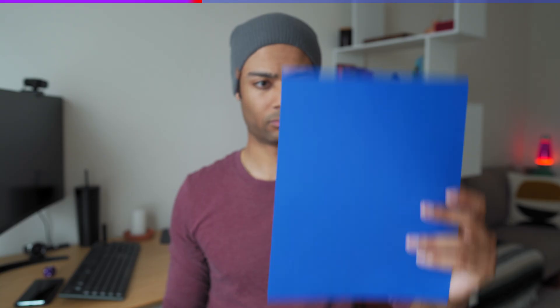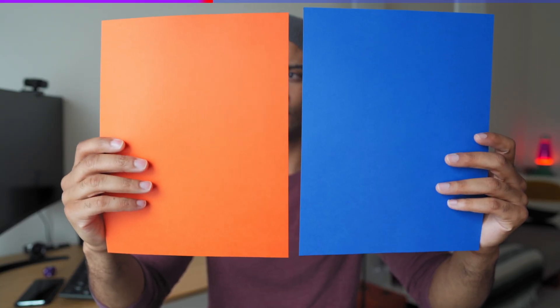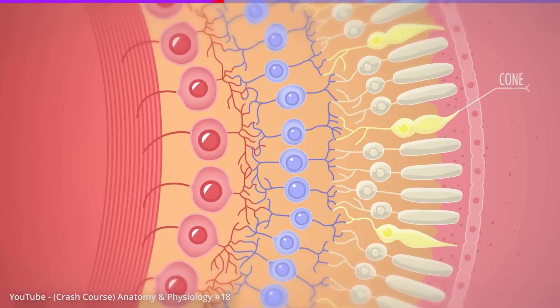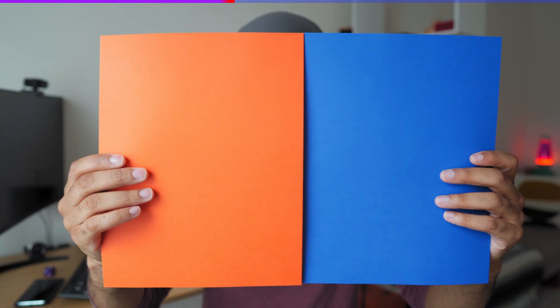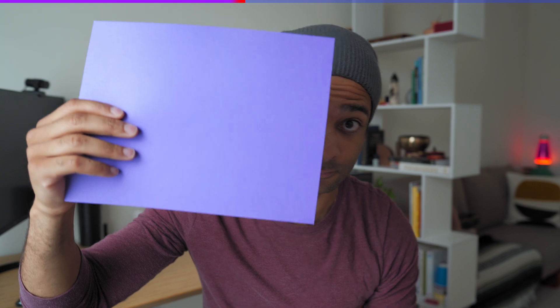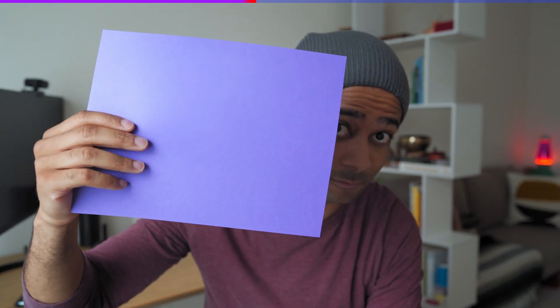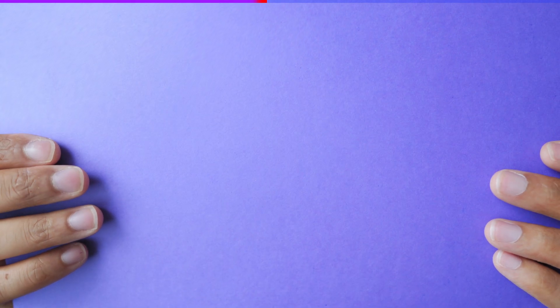Our brain notices this lapse in information and decides to take two colors that do exist — blue and red — and as they're being received by the cones within our eyes, our brain scrambles that information and creates the color purple. So when you're looking at something that's purple, just be aware that you're actually not looking at a color at all — all of that information is going on inside of your head.